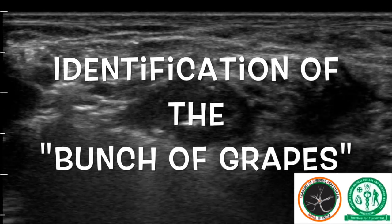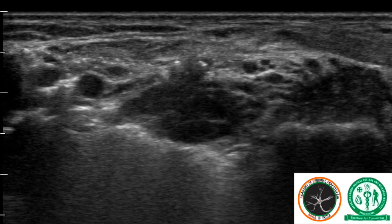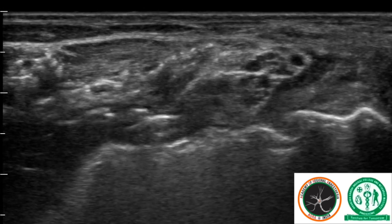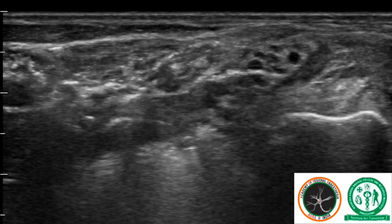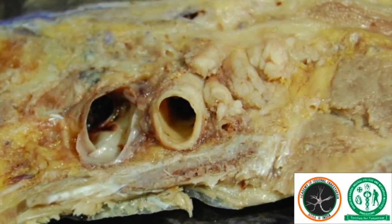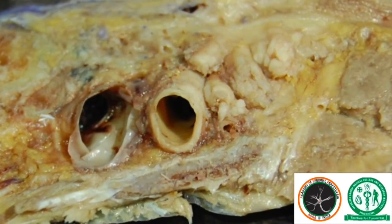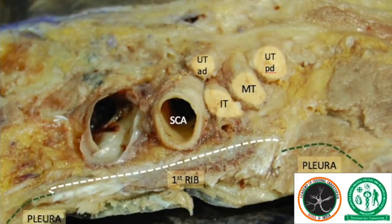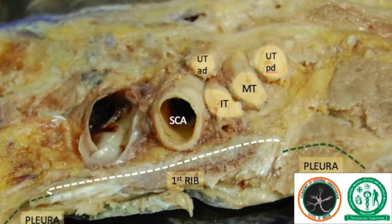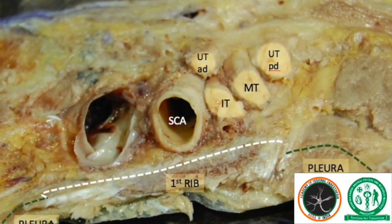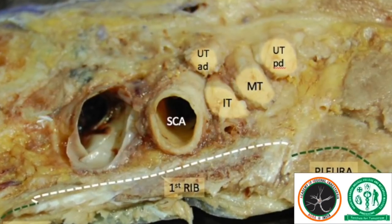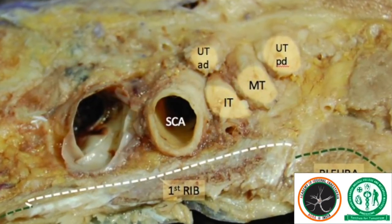Last but not least is the bunch of grapes. When we looked at the actual anatomy, it revealed what these grapes were. They were the anterior and posterior divisions of the upper trunk, along with the middle trunk and the inferior trunk, which was present in the so-called eight-ball corner pocket behind the subclavian artery — all elements sitting on top of the first rib.